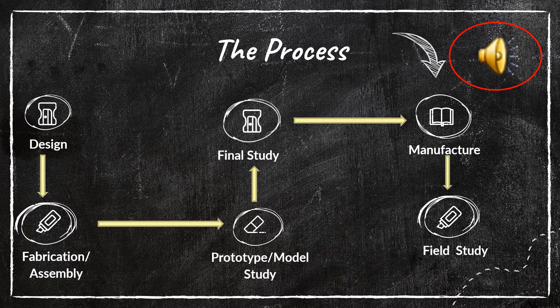The first step is design. Every product needs a design — an image or plan based on which the product is made. The next step is to fabricate or assemble the aids required to make the product. The third step is prototype or model study. Before moving to the final product, it is necessary to make a prototype to analyze any flaws or rectifications necessary. Prototype or model study helps eliminate the massive expenditure from failures if any are to occur at the final step.